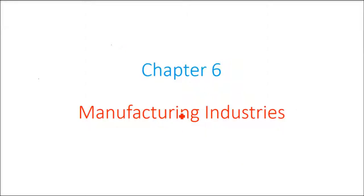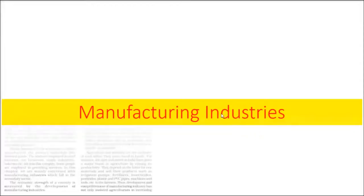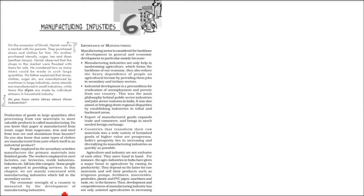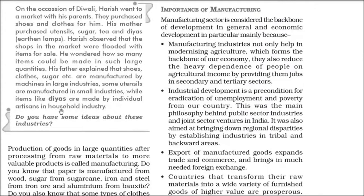We are discussing Chapter 6: Manufacturing Industries. The story starts with a family. Harish is the kid and they are doing Diwali shopping. When he sees all the products, his father explained that the shoes, clothes, and sugar they are buying are made either in large industries using big machines, or utensils manufactured in small industries, or items made by hand artisans in household industries.